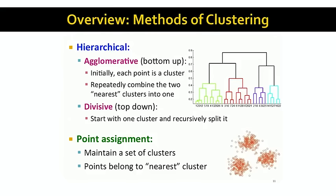Now that we understand distance measures, here's an overview of the important methods of clustering. The two important methods are hierarchical methods and point assignment methods. Within hierarchical methods, we can go bottom-up or top-down. Bottom-up, or agglomerative, methods start with each point in its own cluster and repeatedly combine the two nearest clusters into a single cluster until done. Divisive, or top-down, methods place all points in one cluster and keep recursively splitting until we have the desired number of clusters. Point assignment methods maintain a set of k clusters and repeatedly assign each point to its nearest cluster until all points are assigned.